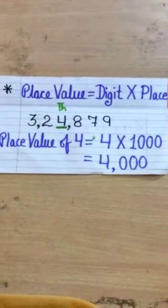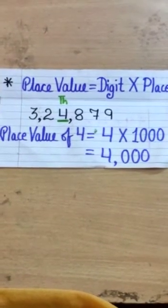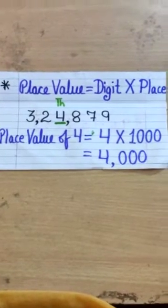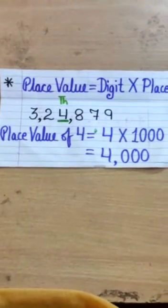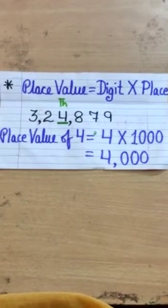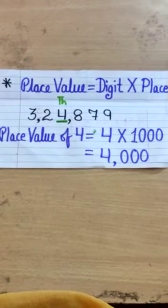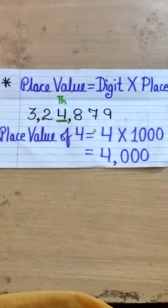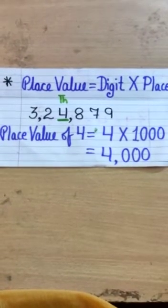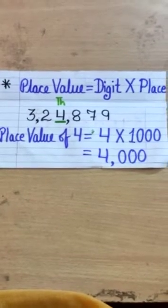Now, our next topic is place value. First of all, we have to understand what is the difference between place and place value. The place means only its position. But place value means digit multiply with its position. The digit and what is the position of that digit and its value. The formula we have is place value equals digit multiply with its place.